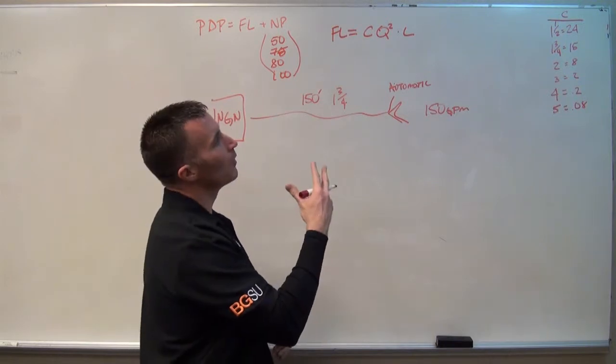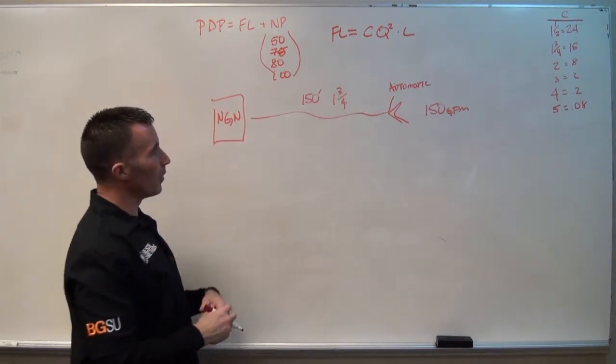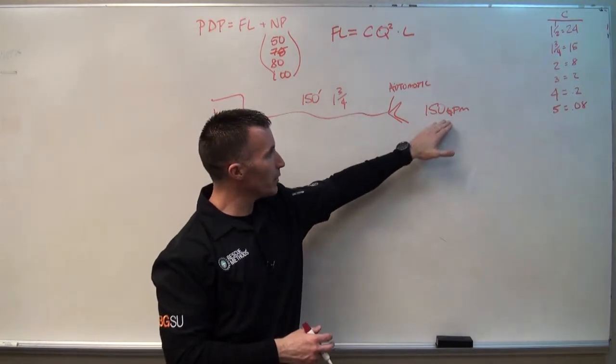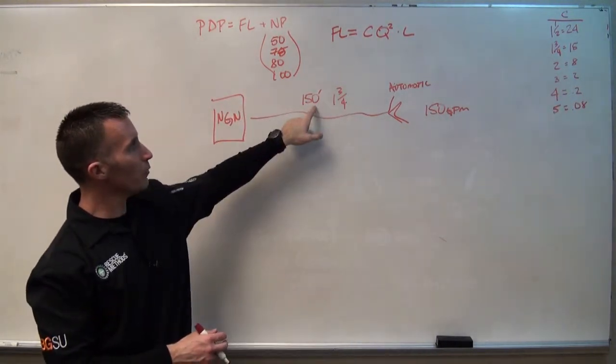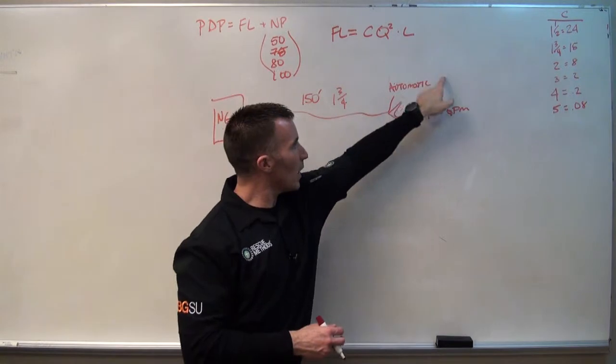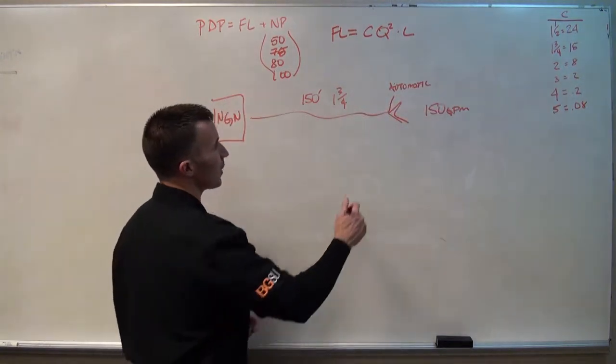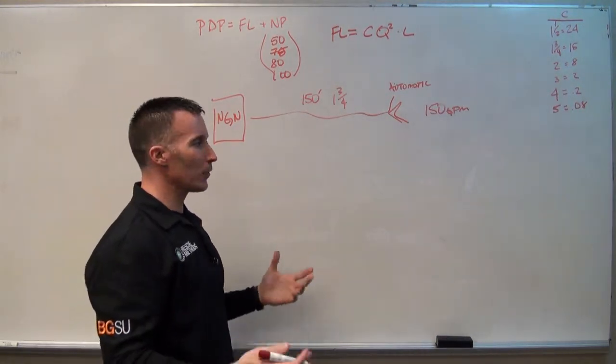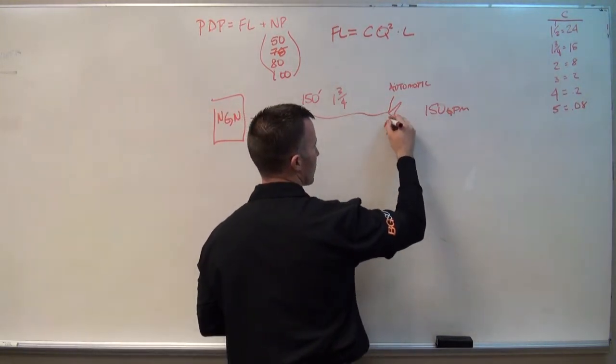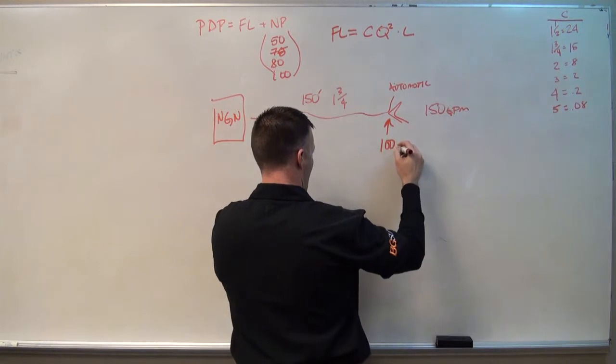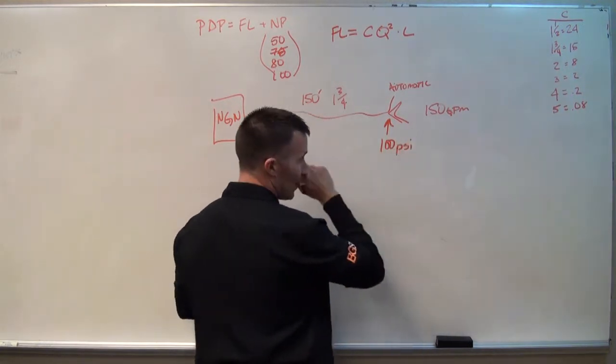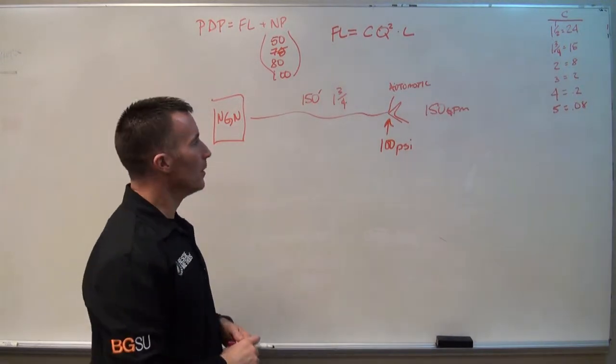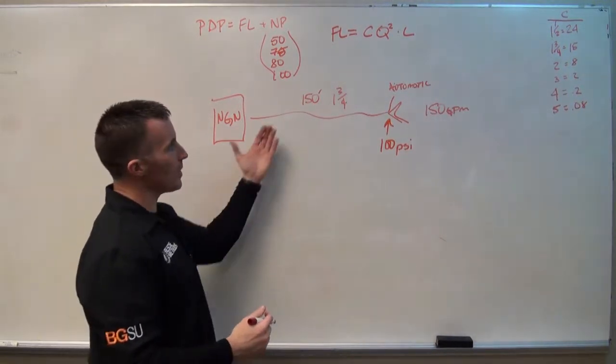When we go back to our example here, we know we're using an inch and three quarter hose line. We know we want to flow 150 gallons a minute. We know it's 150 foot long. We know what type of nozzle it is. Knowing it's a standard 100 pound automatic nozzle, we know we need 100 pounds right here at the tip in terms of nozzle pressure in order to make it function properly. So we've got the basic components.